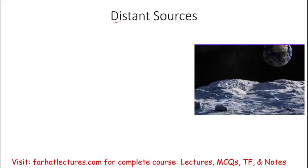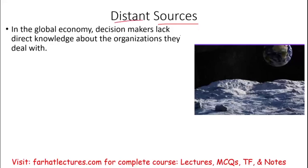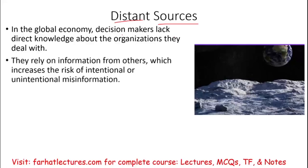The first one is distant sources. In a global economy, you might be investing in a company that's in Asia, Africa, or the Middle East. So you have to make a decision whether you should invest or not. What do you rely on? You rely on information provided by others.